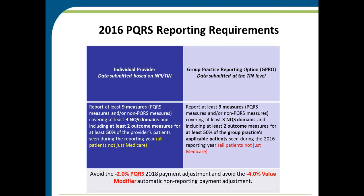Starting with the reporting requirements: physicians and group practices have an opportunity to decide if you want to report as an individual or as a GPRO. Essentially, across both individual and group reporting, everyone is trying to achieve at least nine quality measures across three NQS domains, and at least two of those PQRS measures must be outcomes. If an outcome is not available, there are additional measures you can report. It must cover at least 50% of all patients seen during the year, and we collect all-payer data — both Medicare and non-Medicare patients.